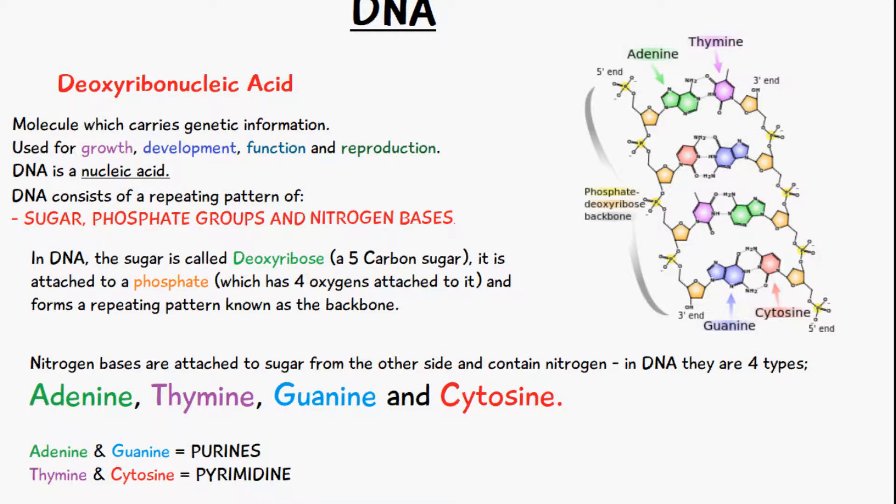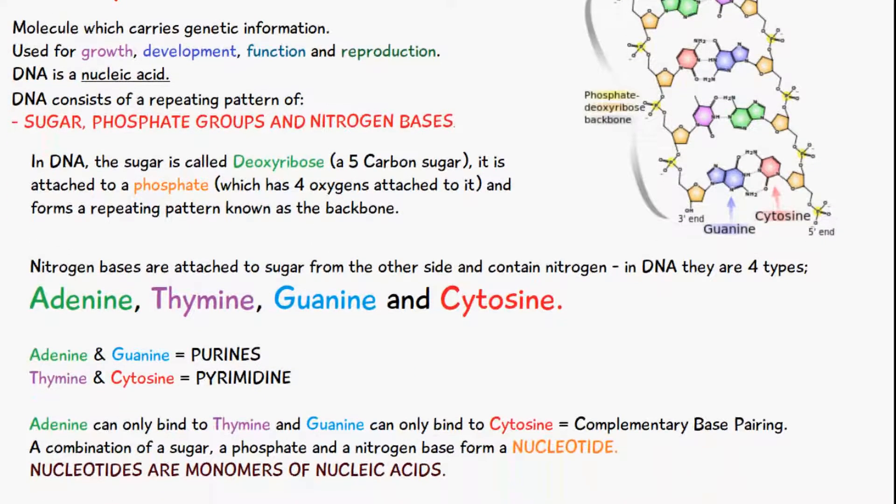Adenine can only bind to thymine, and guanine can only bind to cytosine. The way this bonding works is through something known as complementary base pairing — these nitrogen bases can only bind to certain other nitrogen bases. That's why adenine and thymine only bind together, and guanine and cytosine only bind together.